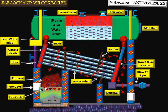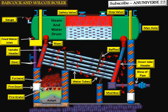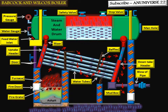This is the stop valve, fitted at the highest part of the shell or drum. Its function is to control the flow of steam from the boiler to the main steam pipe and to shut off the steam completely when required. The pressure gauge is used to measure the pressure of steam inside the boiler and is fixed at the front of the steam boiler. The water level indicator is a glass tube, generally two in number, fitted in front of the boiler to indicate the level of water inside the boiler to an observer.